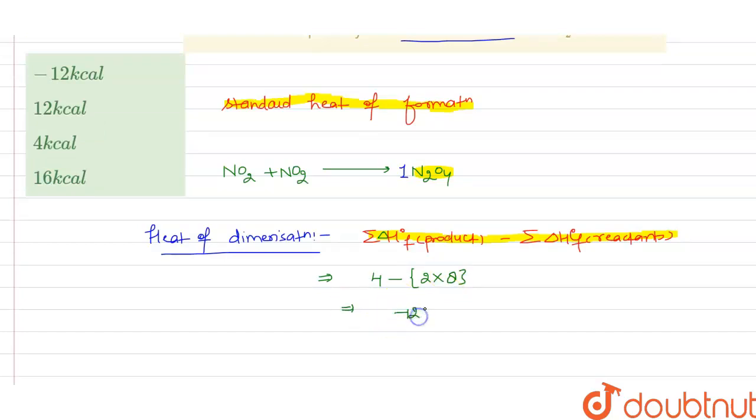Here, the negative sign indicates that it is an exothermic process, that is, the heat is being evolved.